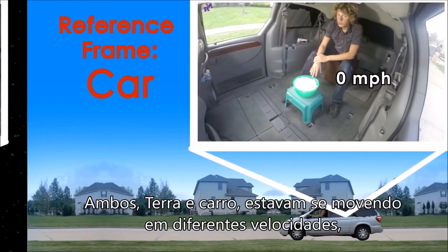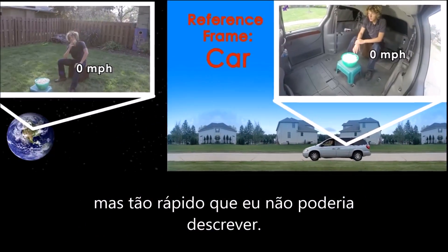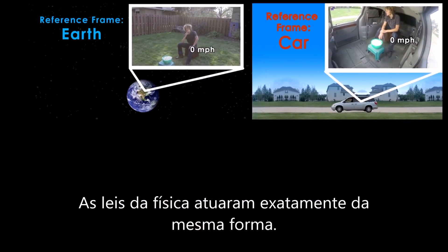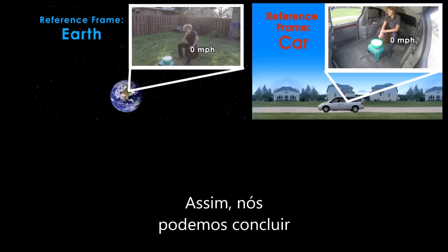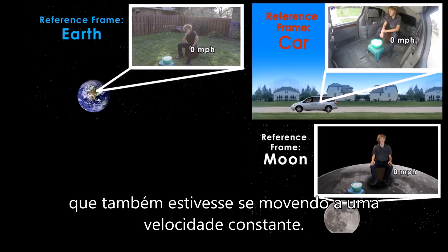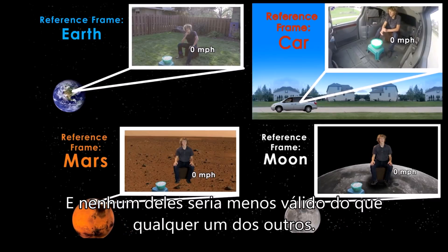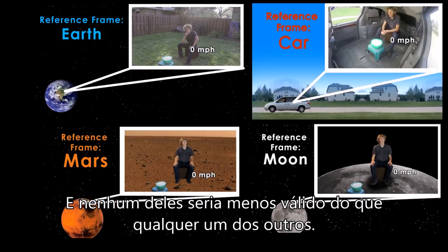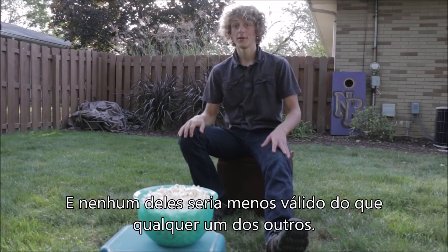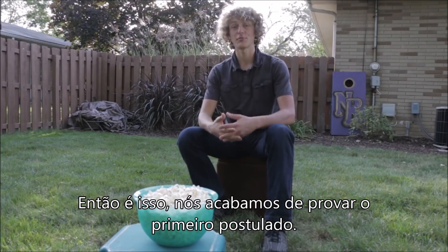Both the Earth and car were moving at different speeds, but as far as I could tell, the laws of physics acted exactly the same. Thus we can conclude the same thing would happen in any frame of reference that was also moving at a constant speed, and none of them would be any less valid than any of the others. So we just proved the first postulate.